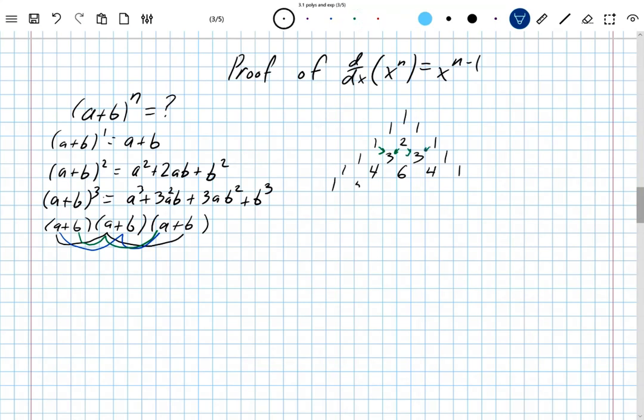One plus four is five. Four plus six is ten. Six plus four is ten. Four plus one is five. One plus zero is one. This whole thing has a name. It's called Pascal's Triangle. Thank you, Pascal.